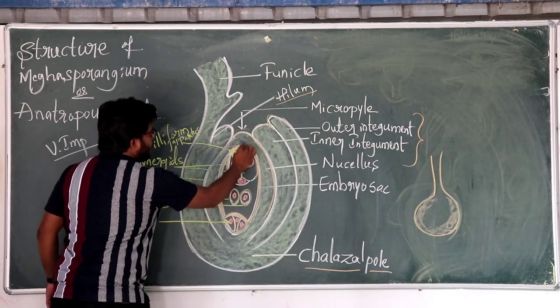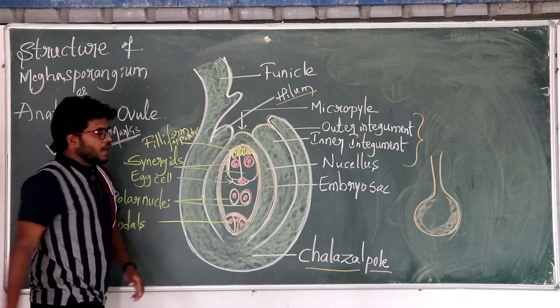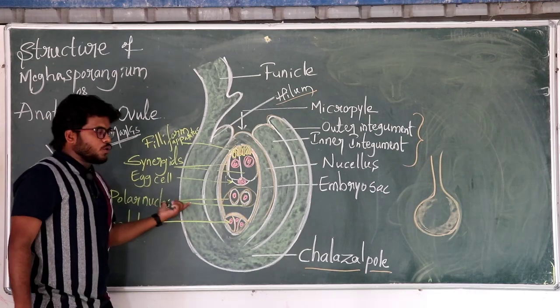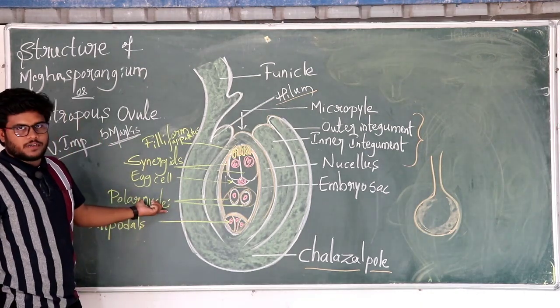It has the filiform apparatus there. At the middle, the two polar nuclei at the secondary cells are present.